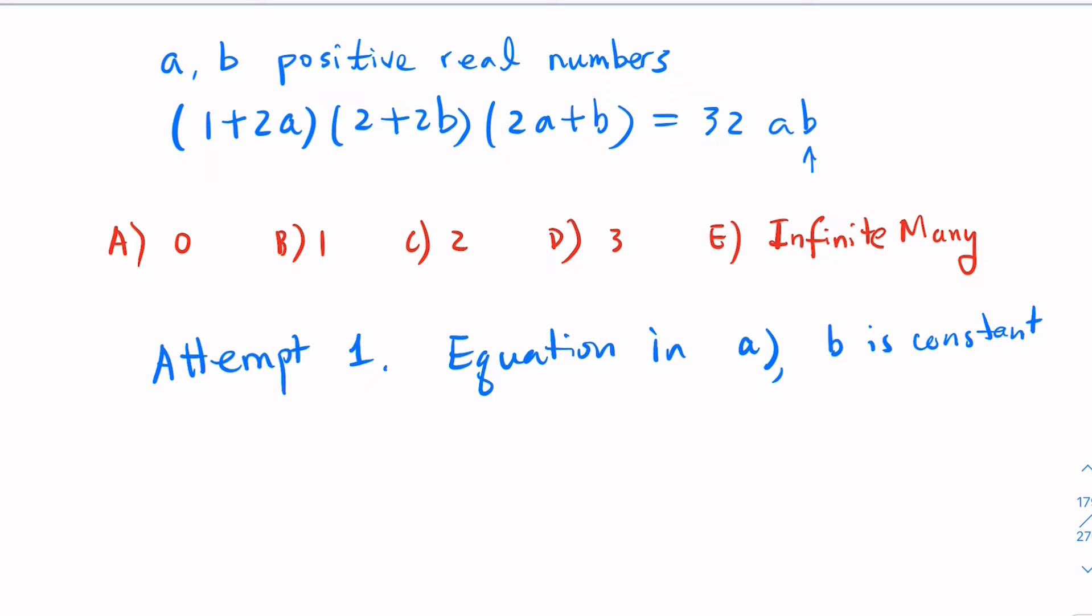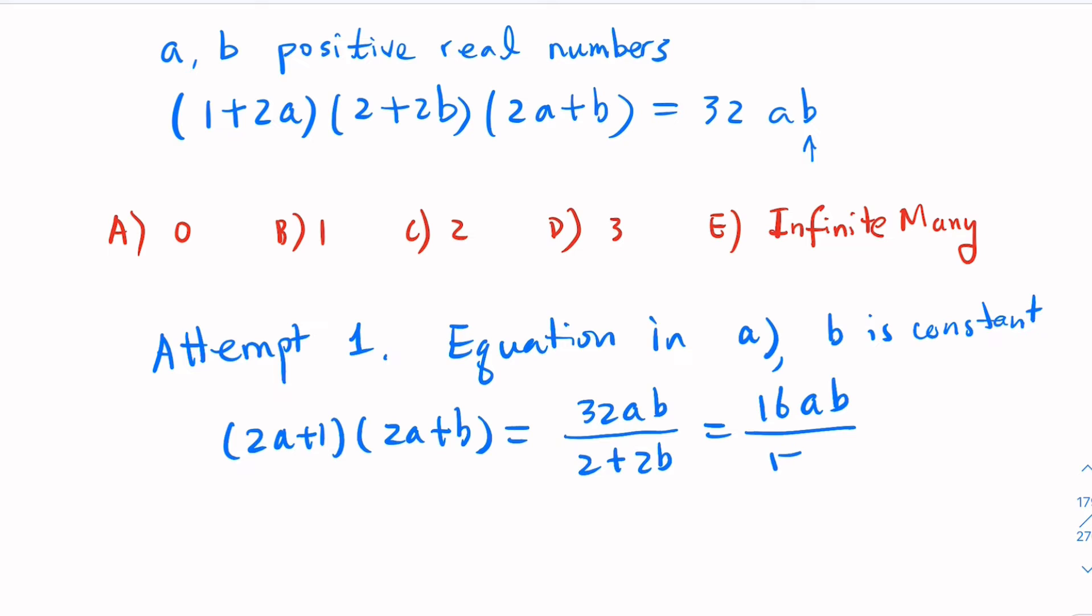To make it clear, you'd have (2A + 1)(2A + B) on the left. If you try to expand it and rearrange, this would give a quadratic term and a linear term of A, moved to the left-hand side.